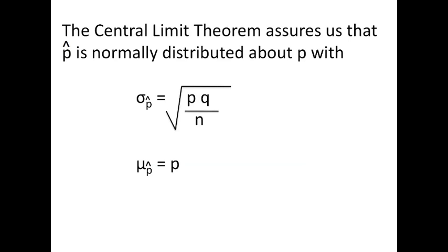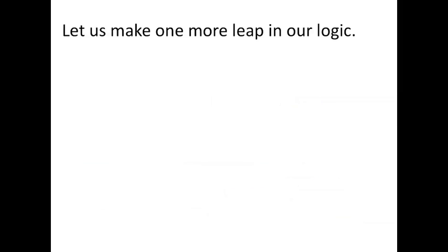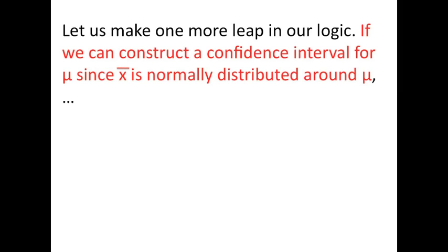Of course, we're reminded that mu for the p hat distribution is p itself. So p hat is normally distributed around p with a standard deviation equal to the square root of p times q over n. Does it make sense that just as x bar is normally distributed around mu, that p hat would be normally distributed around p? Well, certainly it does.